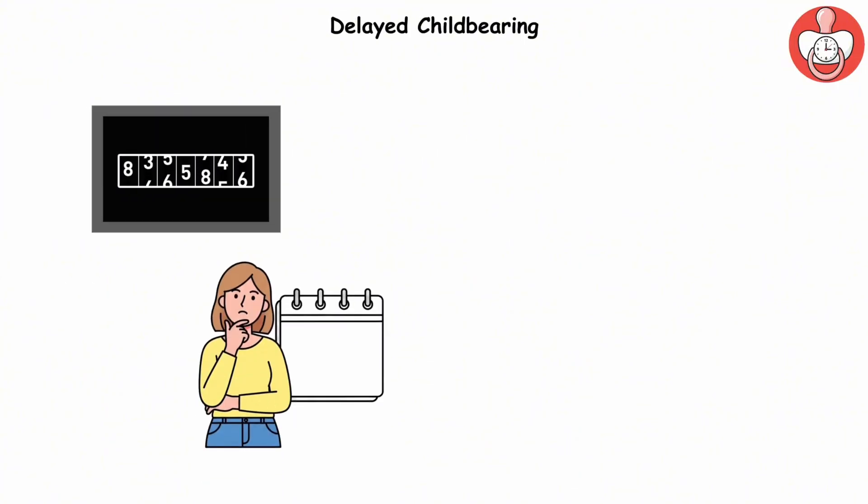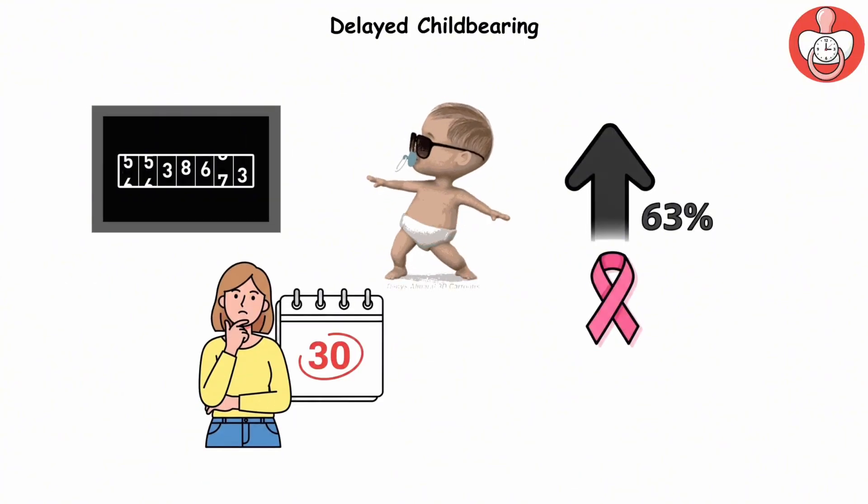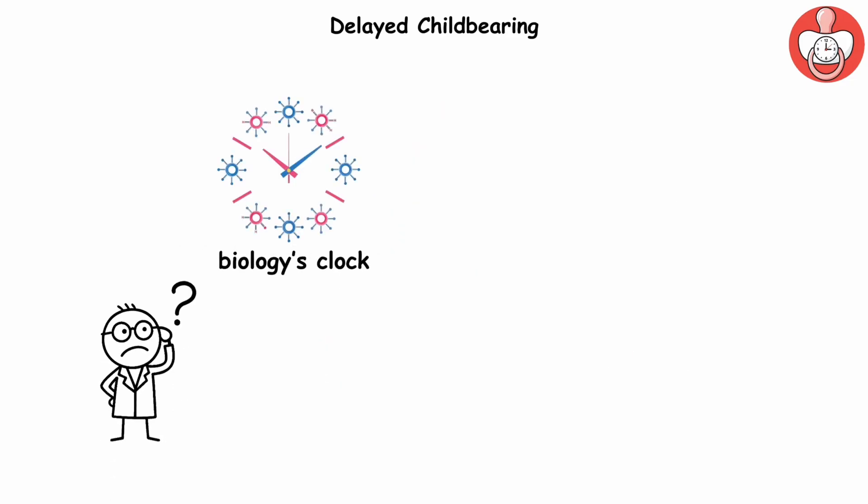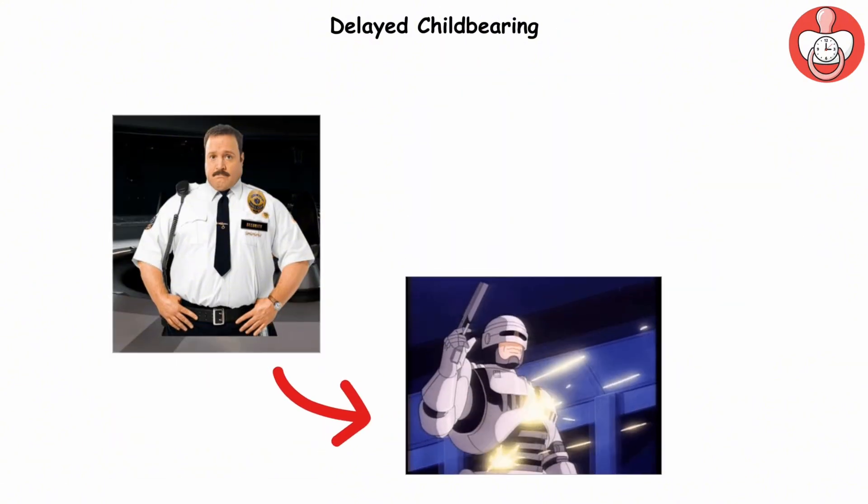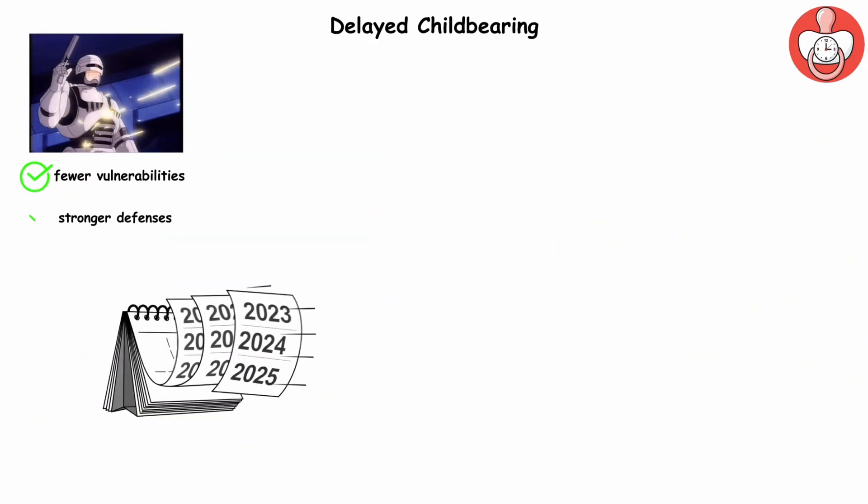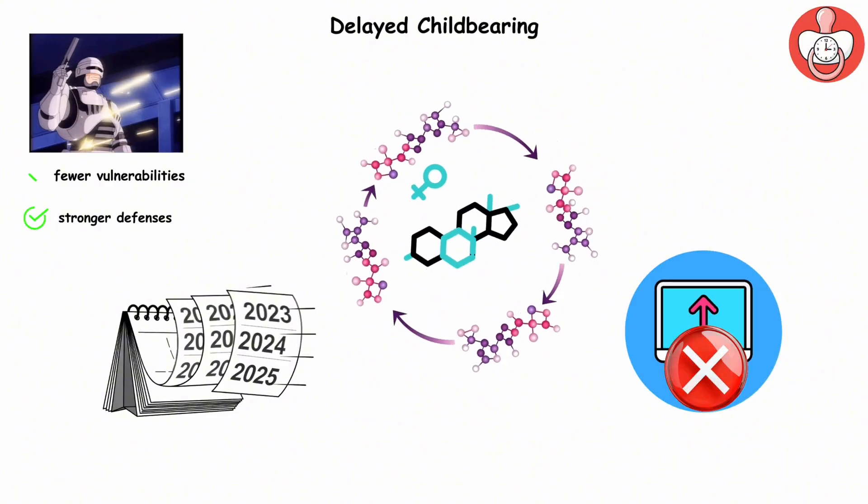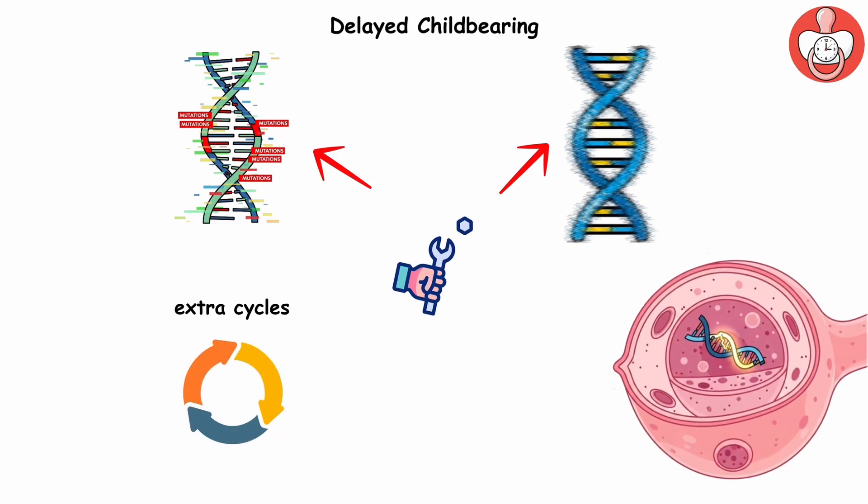Delayed childbearing. Here's a surprising stat. Women having their first child after 30 are 63% more likely to develop breast cancer. Why? It all comes down to biology's clock and a little hormone called estrogen. Pregnancy transforms breast tissue, making it more resistant to cancer. Think of it like updating your phone's security system. Fewer vulnerabilities, stronger defenses. But when childbearing is delayed, your body spends more years cycling through estrogen without that protective update. Those extra cycles? They quietly increase the chance of DNA glitches, mutations, in breast cells.